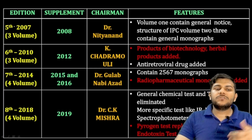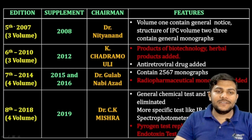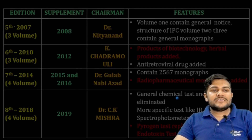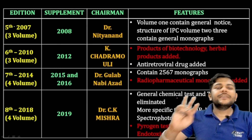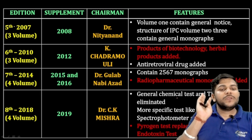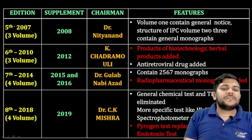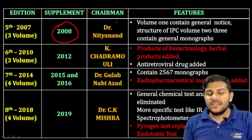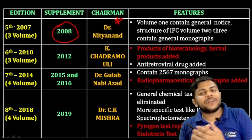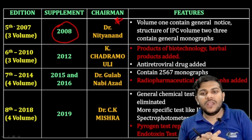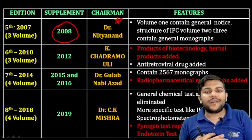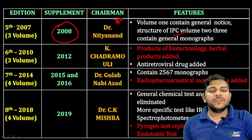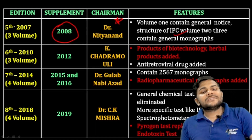The fifth pharmacopoeia was published in 2007, and for the first time it contained three volumes. It was supplemented the following year in 2008. The chairman remained Dr. Nithyanand. It also included IPC journal monographs.